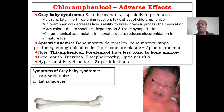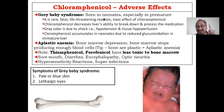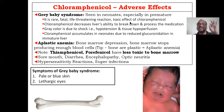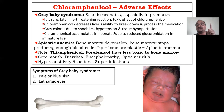Adverse effects: the main drawback is gray baby syndrome, a mix of wheat color, gray, and blue-pale color appearance seen especially in neonates and premature babies. It is very rare but fatal and life-threatening. Chloramphenicol decreases the liver's ability to break down and process medication. The gray color is due to shock and hypotension — it creates tissue hypotension — along with pale or blue skin and lethargic eyes.